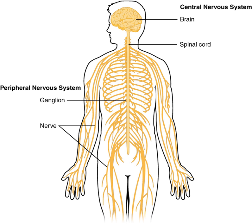There are many CNS diseases and conditions, including infections such as encephalitis and poliomyelitis, early-onset neurological disorders including ADHD and autism, late-onset neurodegenerative diseases such as Alzheimer's disease, Parkinson's disease, and essential tremor, autoimmune and inflammatory diseases such as multiple sclerosis and acute disseminated encephalomyelitis, genetic disorders such as Krabbe's disease and Huntington's disease, as well as amyotrophic lateral sclerosis and adrenoleukodystrophy. Cancers of the central nervous system can cause severe illness and, when malignant, can have very high mortality rates.